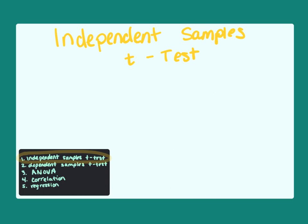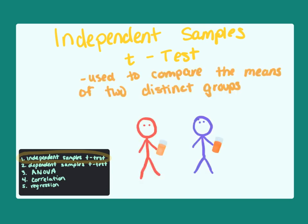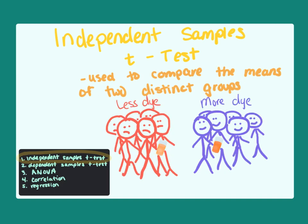Let's take a detailed look at the independent samples t-test. It is used to compare the means of two distinct groups. Suppose I hypothesize that a group of people given strawberry juice with a little bit of dye will like it less than people given the same juice colored with more food coloring. I have members of two distinct groups that I'm trying to compare, and nobody in the first group is also in the second group — the groups do not overlap.